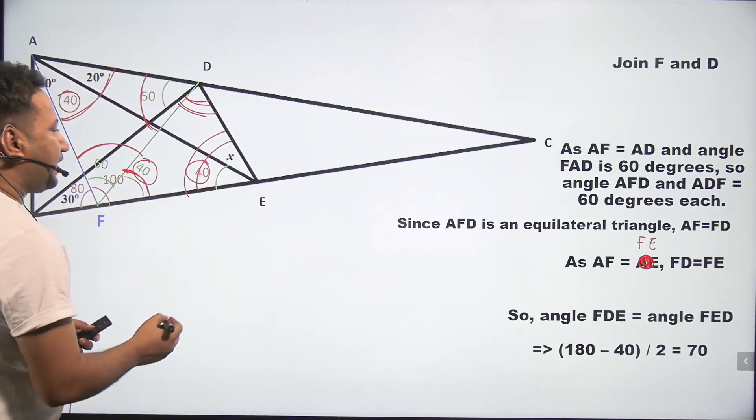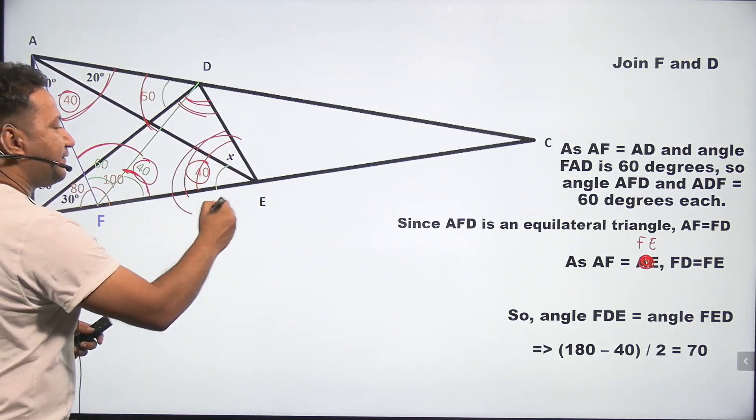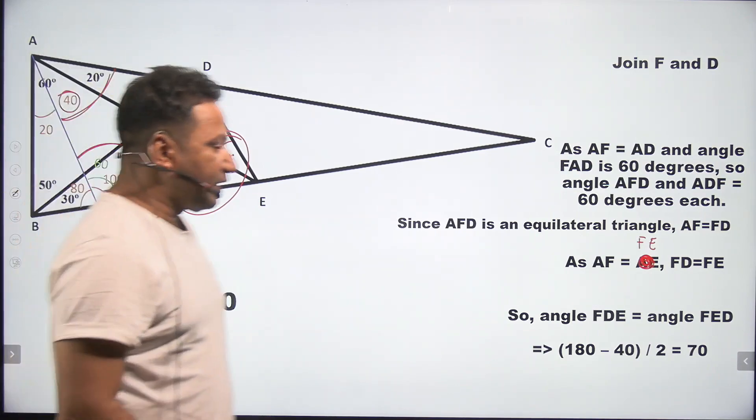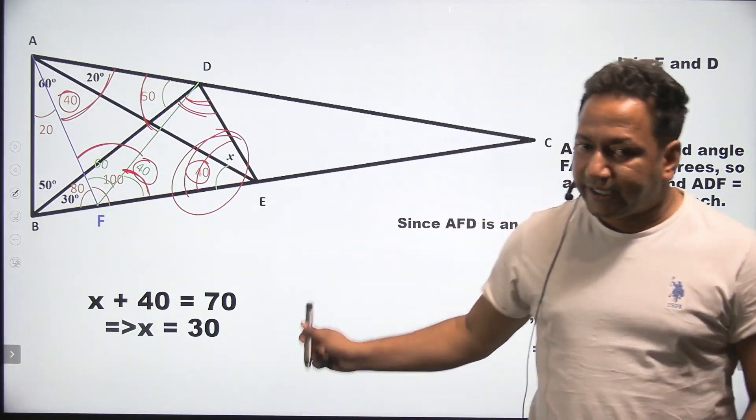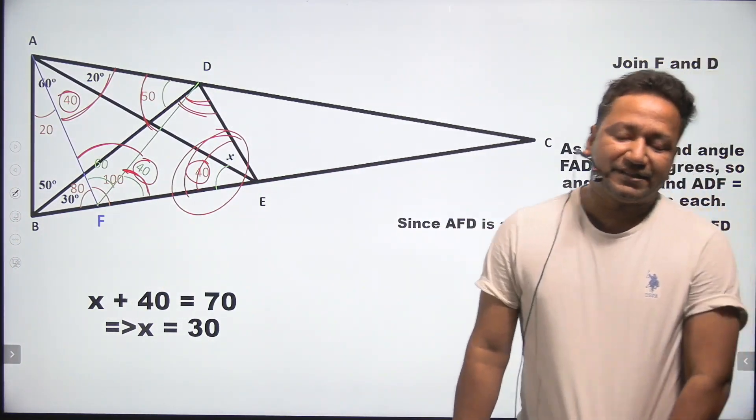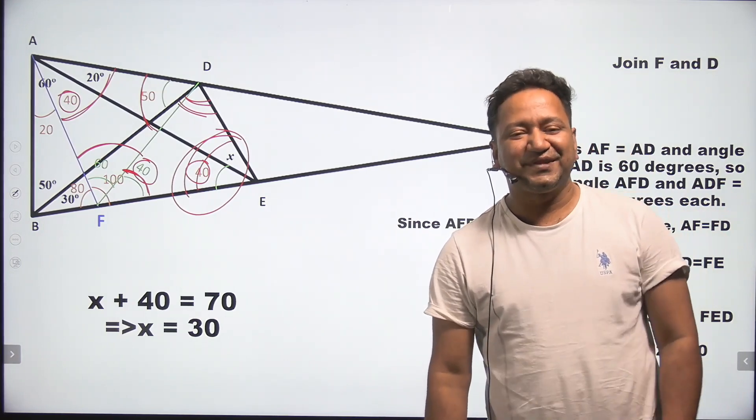As mentioned over here. So now we have this thing is 70. That means 40 plus X will be 70. Or I can say, X is equal to 30 degrees. I hope this solution is clear. Thanks.